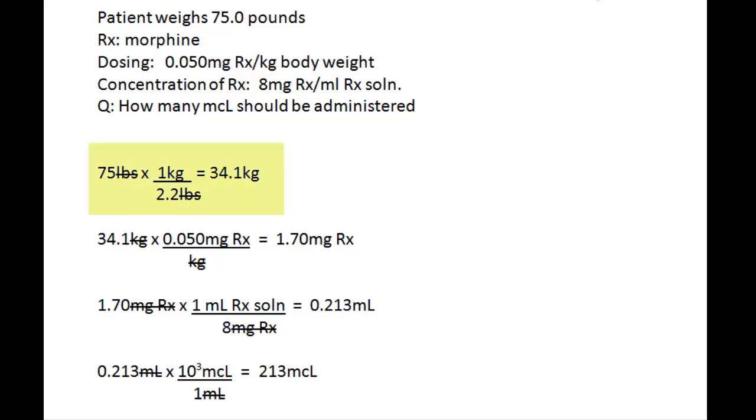Converting 75 pounds to kilograms, you get 34.1 kilograms. Then convert the 34.1 kilograms to milligrams of drug. That's 1.7 milligrams of drug for the patient, which is not a lot of drug.